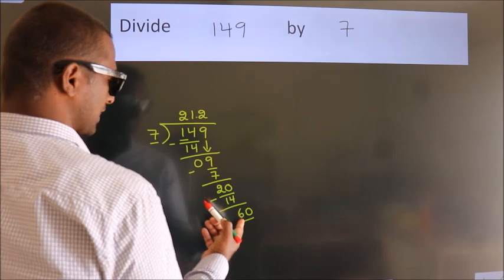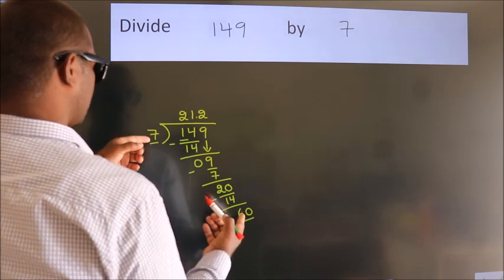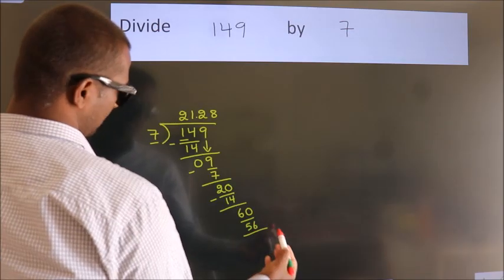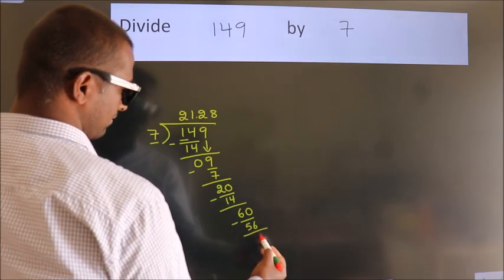A number close to 60 in 7 table is 7, 8, 56. Now we subtract. We get 4.